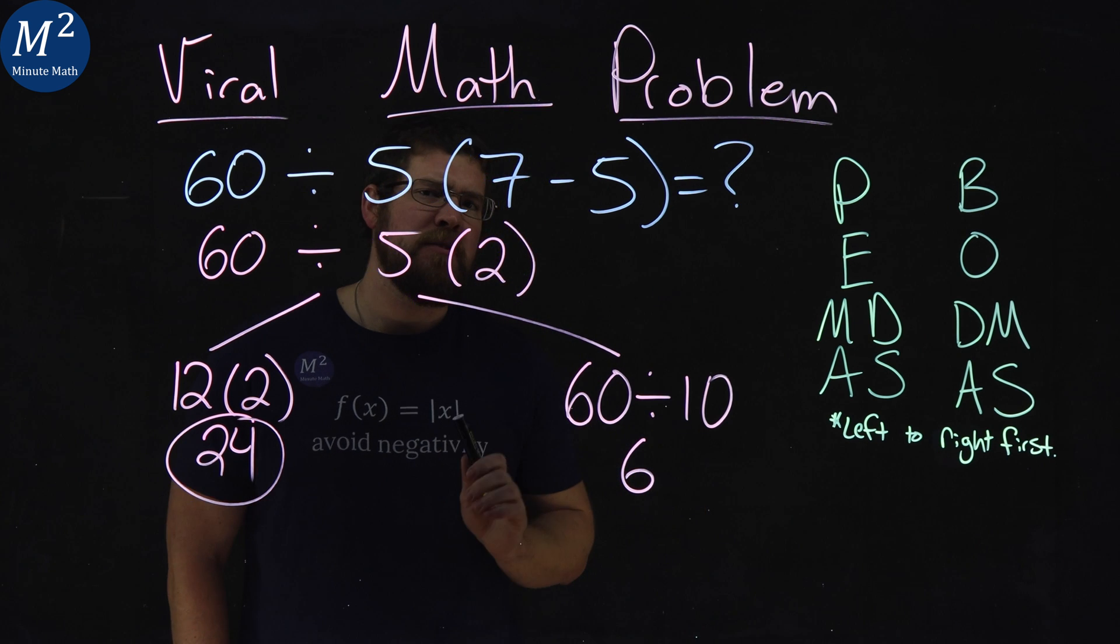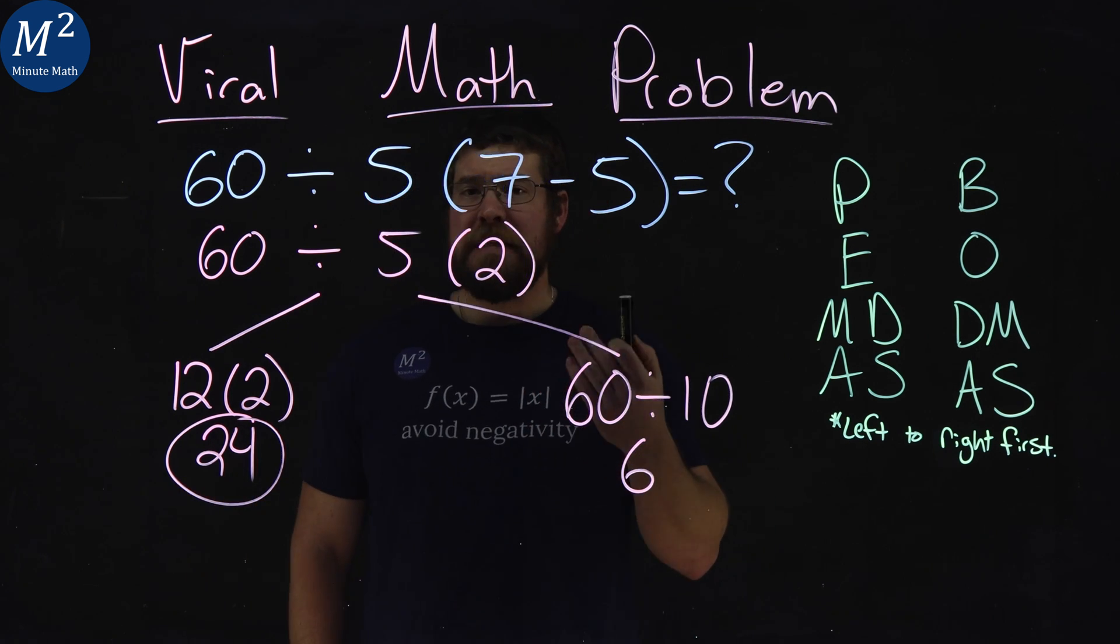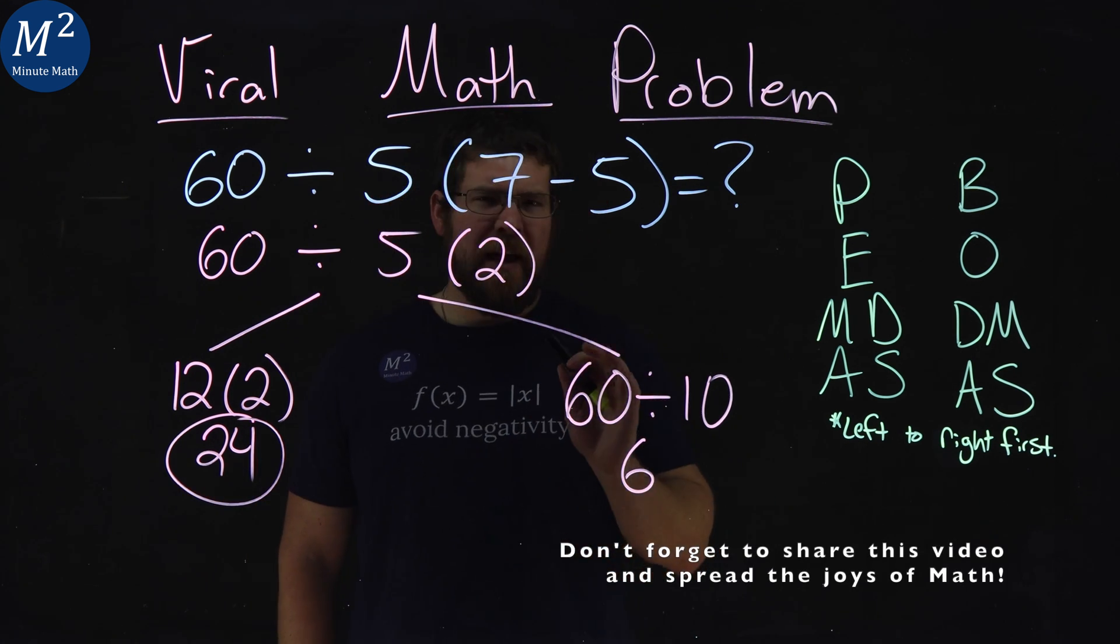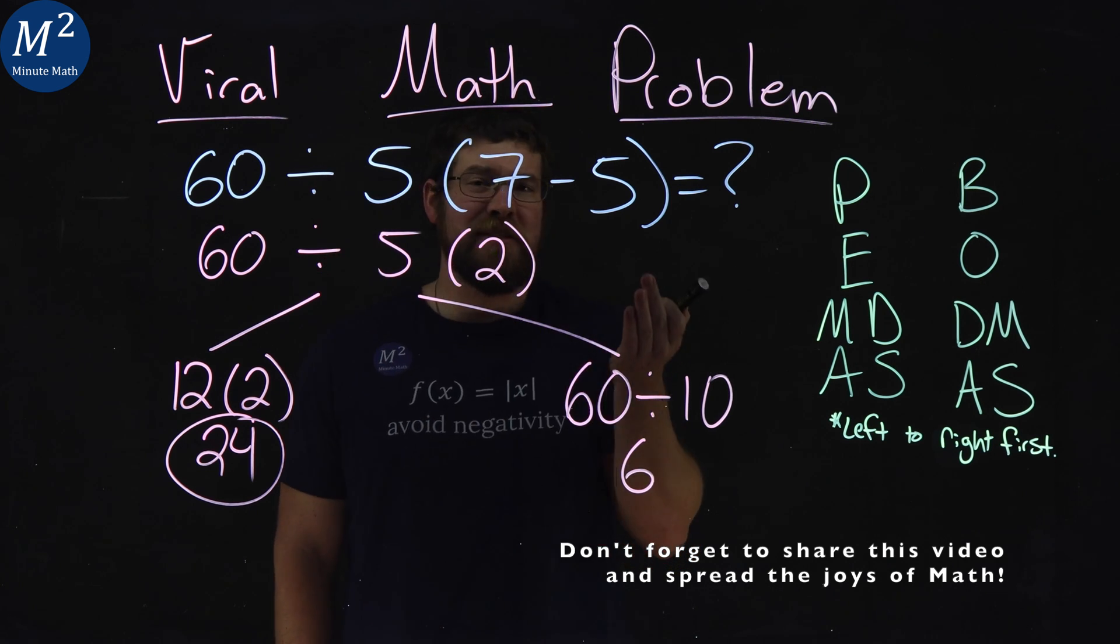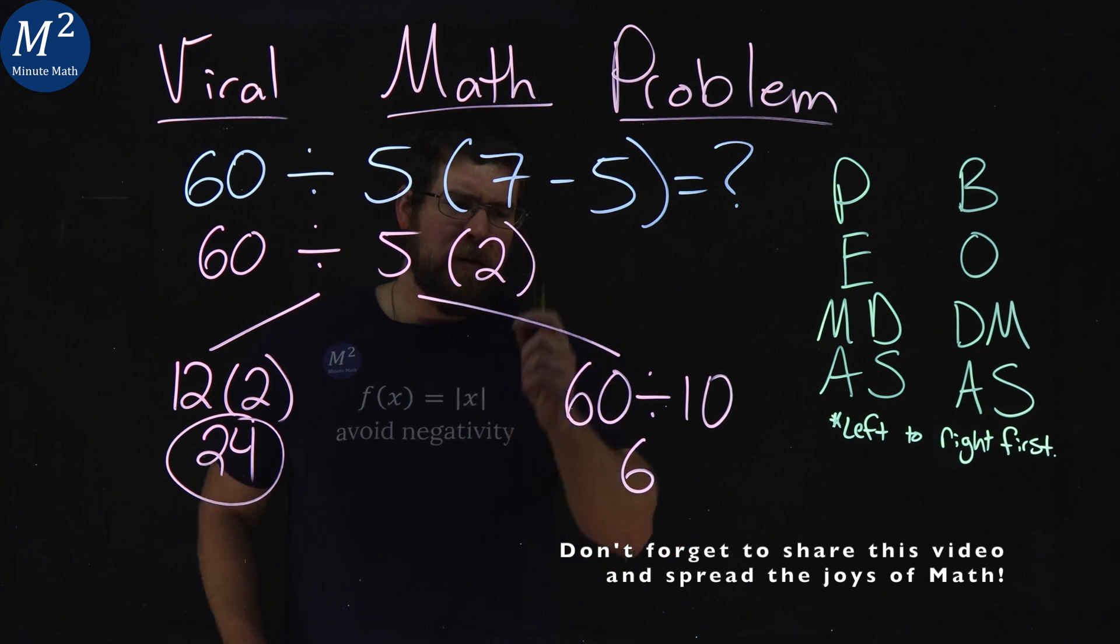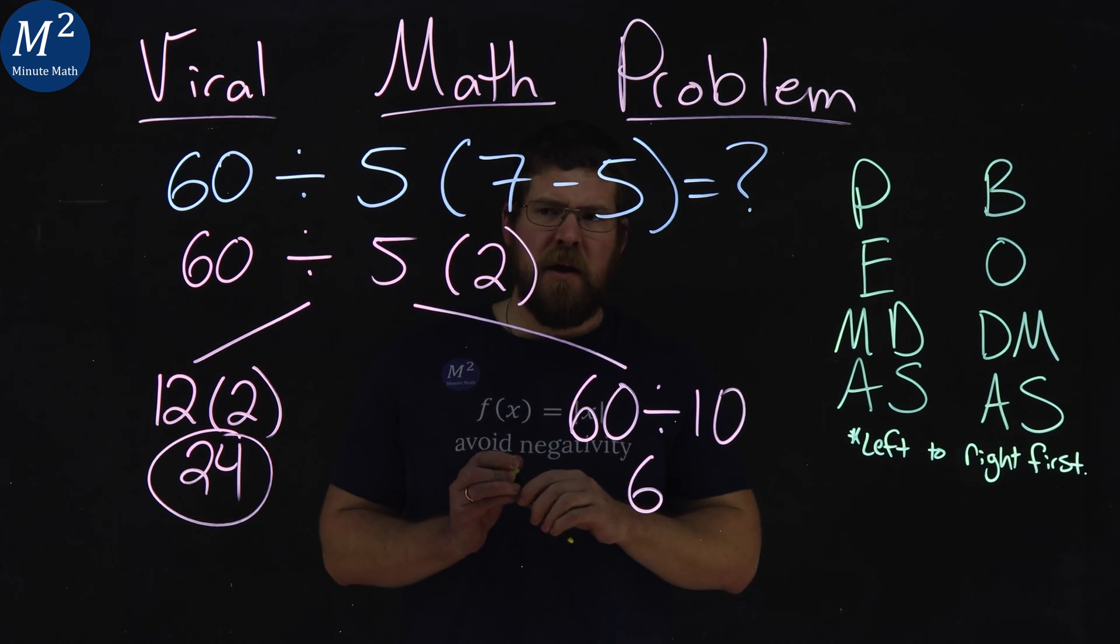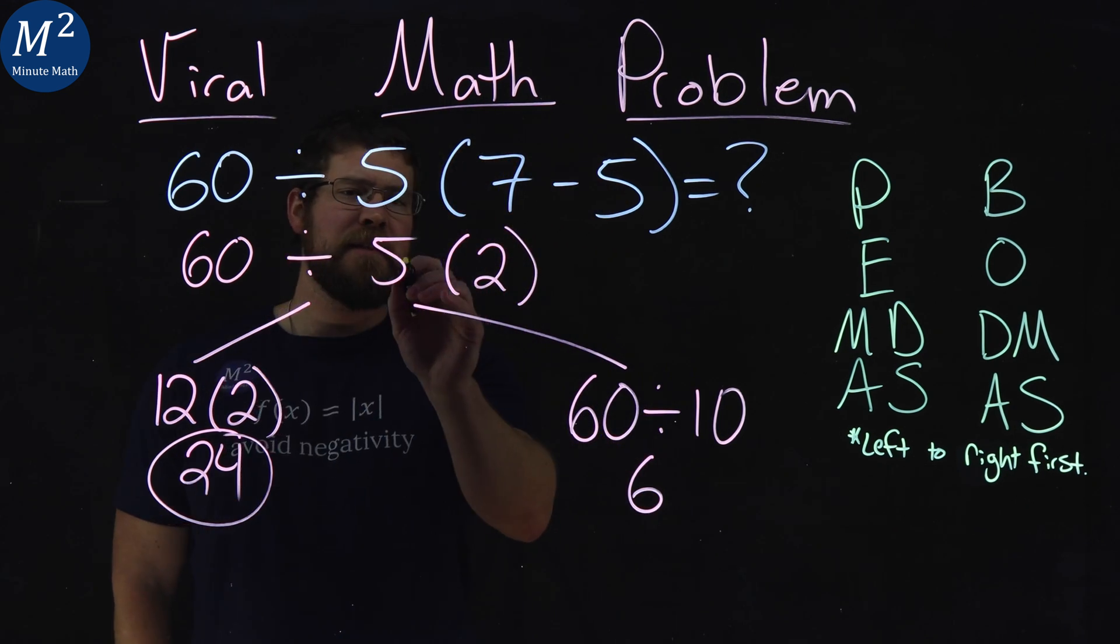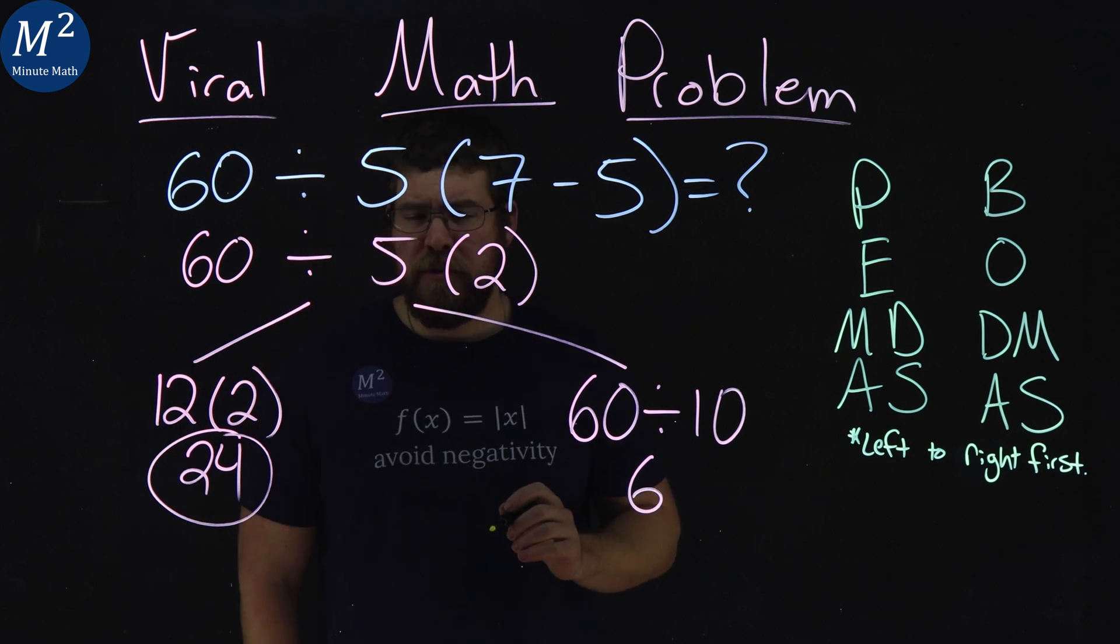And I think the issue is really how this question is written. It's a poorly worded question. And all of these that are viral like this are poorly worded questions. So I'm going to pose this to you. Let's say we're at this point. That's 60 divided by 5 times 2.